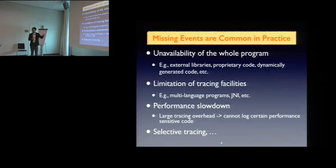Unfortunately, this is not true in practice because missing events are very common in practice. There are just so many examples. I list a few of them here. Firstly, unavailability of power systems. Real-world programs have external libraries, have private code, have runtime-generated code, which cause problems when you are trying to trace them, trying to capture the runtime events. And sometimes you have limitations in your tracing facilities. For example, when the whole system has multiple languages, you have to rely on the tracing capability to track different language features. Sometimes it could be very difficult, such as when you are having Java applications with Java native interfaces.